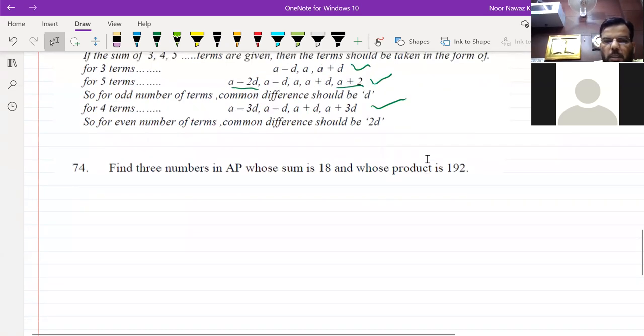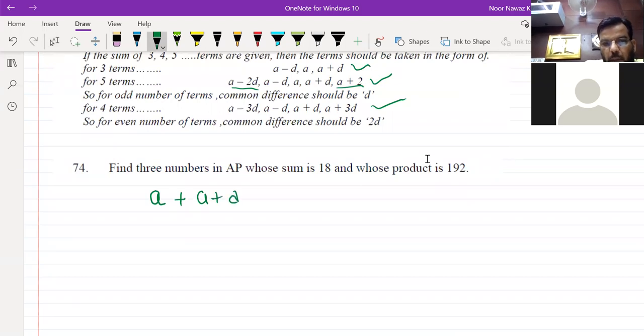There are two things that you have given. One is the sum. When there are 3 numbers, you have to suppose this middle term is a, next term is a plus d, and previous term is a minus d. Their sum is 18. As you write this, the d will cancel. 3a is equal to 18, a is equal to 6.